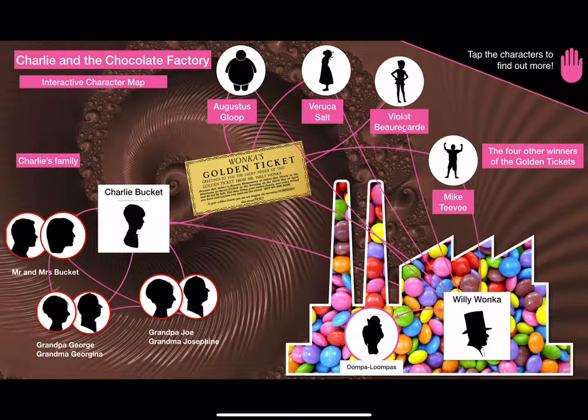Here's an example I created for Charlie and the Chocolate Factory, which we're doing right now in English. All the main characters are there and they're all interconnected because they all have interactions with each other in the novel.